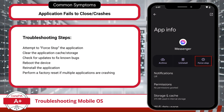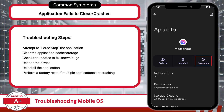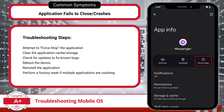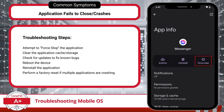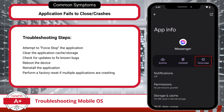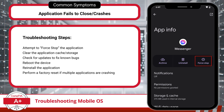Another frequent issue is when an application fails to close or crashes unexpectedly. Often, a failure to close can be resolved by utilizing the force stop option available through the app settings. This force stop option completely shuts down the app and will clear any temporary glitches. As for crashes, these can occur if the app's temporary storage, or cache, becomes cluttered with old data. Clearing the application cache or storage usually resolves these issues, as it removes unnecessary data that may be causing the app to misbehave.